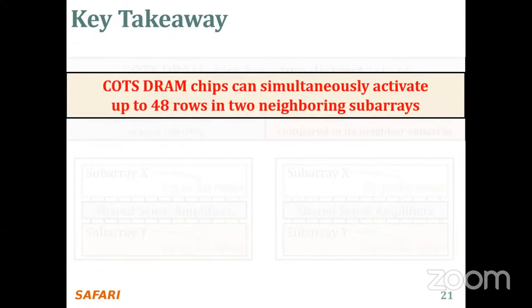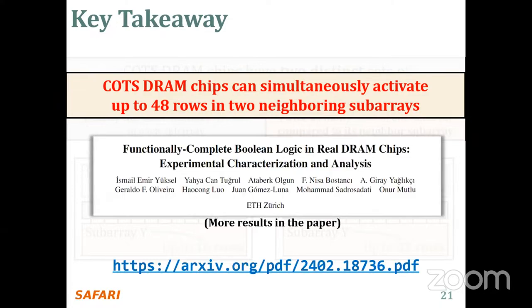Our key takeaway is that off-the-shelf DRAM chips can be simultaneously activated with multiple rows in two neighboring subarrays and can activate up to 48 rows. I refer you to our paper for more results and detailed analysis.